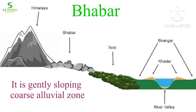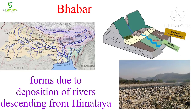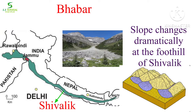It is generally a sloping quartzose alluvial zone. This belt is formed as a result of the deposition of pebbles by the rivers which are descending from the Himalayas in the north.